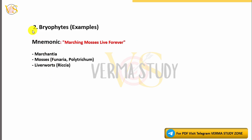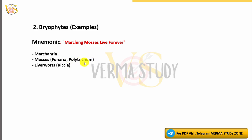2. Bryophytes Examples Mnemonic: 'Matching Morsus Leave Forever Marchantia.' Examples include Moss, Funaria, Marchantia, Phanoria, Polytrichum, Liverworts, and Riccia.